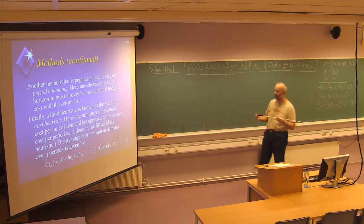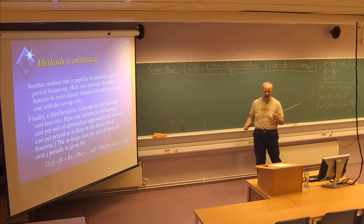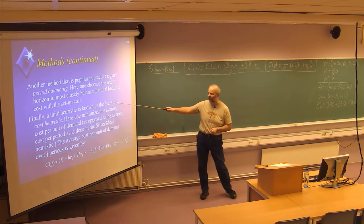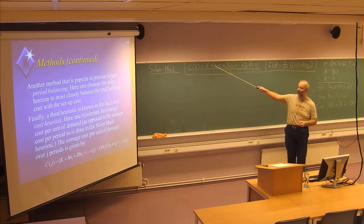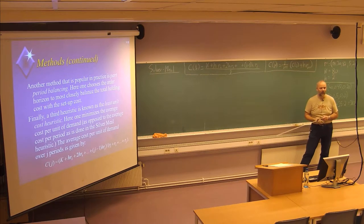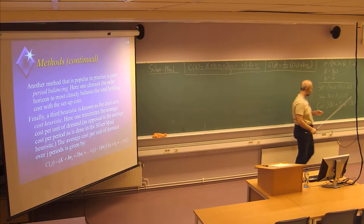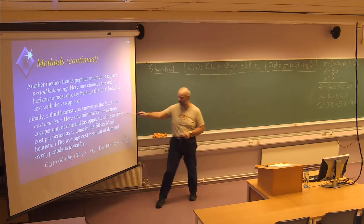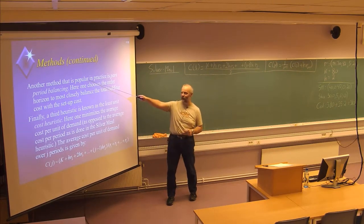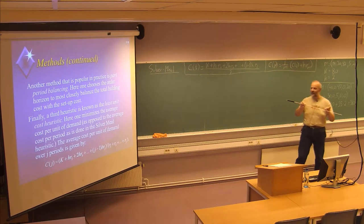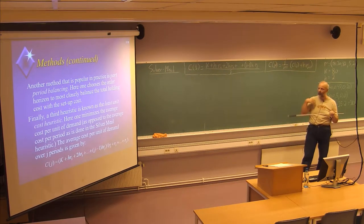Rather, we are dividing by the number of items, or the total number you are actually producing. Now of course talking about the least unit cost, which is similar to the silver meal heuristic but instead of dividing by the number of periods J, you divide by the number of items or the total number you are actually producing. I will go through that first. This is the least unit cost heuristic, and then I will also present what we call the part period balancing heuristic, which tries to balance the holding cost with the setup cost.